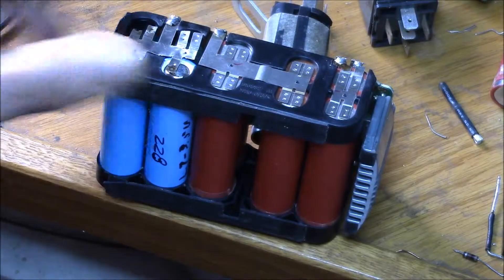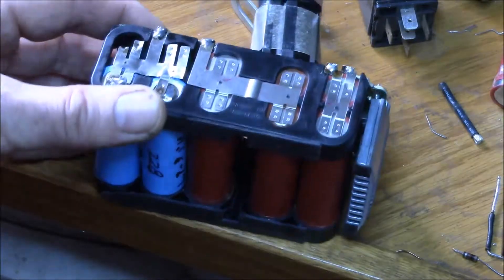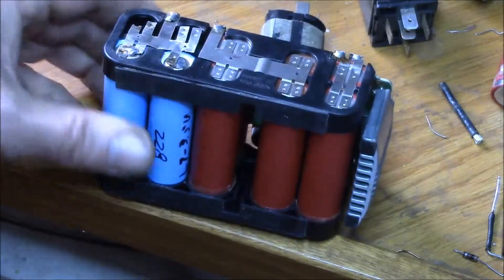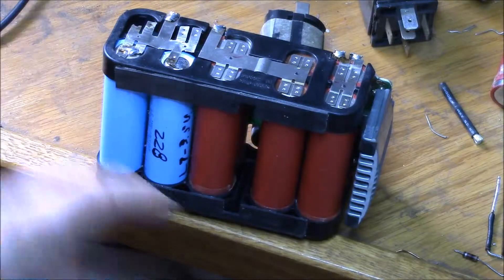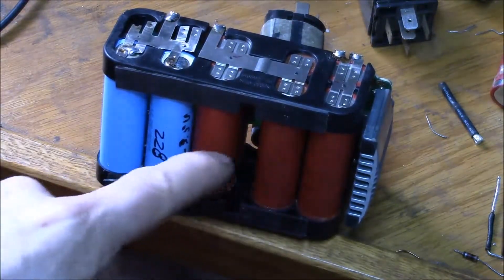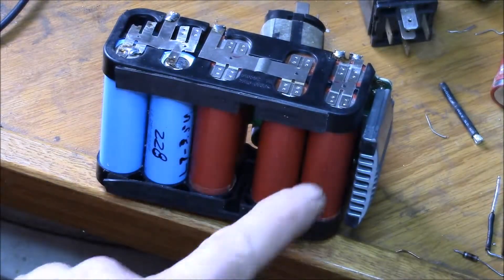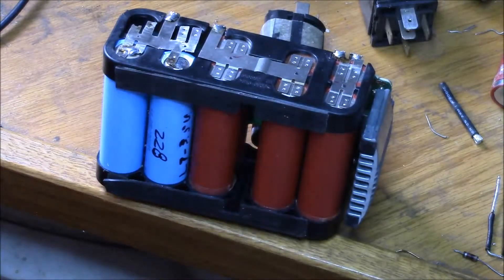Good morning YouTube. Here's that Craftsman C3 battery pack that I tore apart, and these are the six cells that were somewhat good. They're not very good.